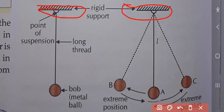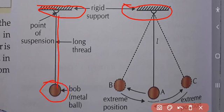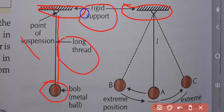The parts of a simple pendulum are: the rigid support at the top, the long thread tied to it, and the metal ball or bob at the bottom. The top attachment point is called the point of suspension.